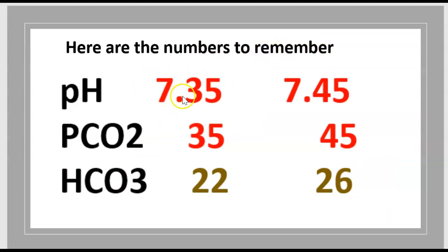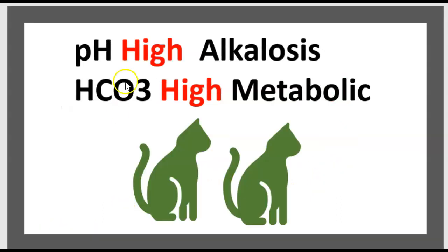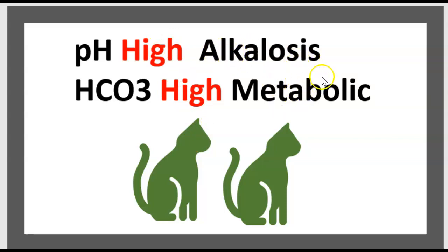Here are the numbers to remember: pH between 7.35 and 7.45. PCO2 is the same range: 35 to 45. HCO3 is 22 to 26. High pH means alkalosis. High HCO3 means metabolic. Both going the same way — that's metabolic alkalosis.